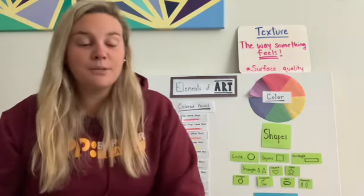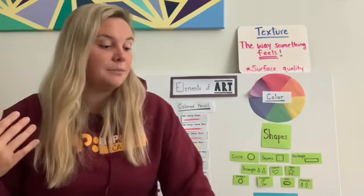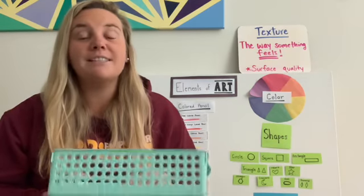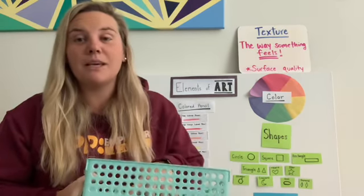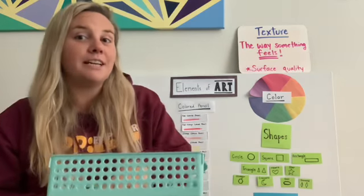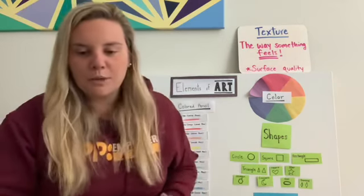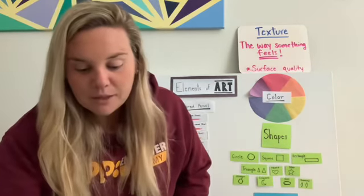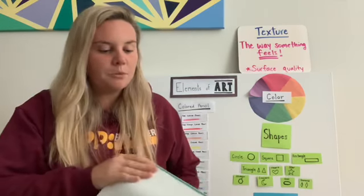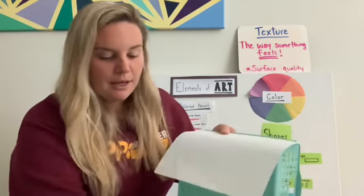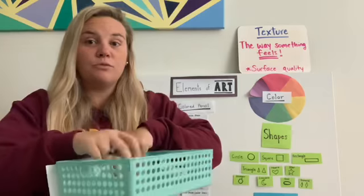Some of the things I found in my home had some interesting textures, and you're going to want to find some actual things because we are going to do what's called a texture rubbing. Why don't I show you what that is first, so you know why we're gathering things. What you'll need is just a piece of computer paper, thin paper, and crayons and the objects you find.